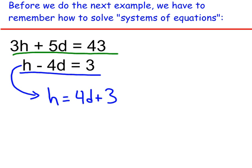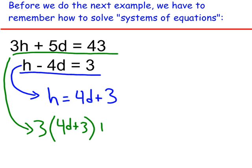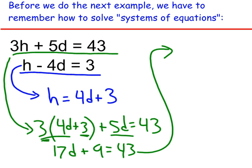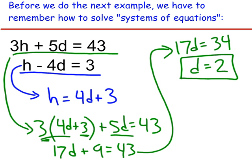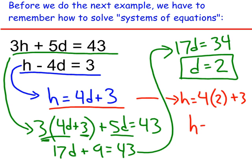So this equation, pretty easy to solve for h. And I expect you may be anticipating what I'm going to do next. We're going to take that h value and we're going to substitute it into the other equation. So when you take that equation and write it as 3h, instead of the h, we'll put the 4d plus 3. And then we'll finish off the equation plus 5d equals 43.